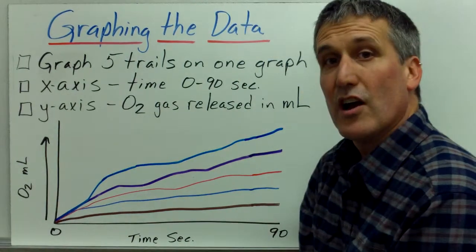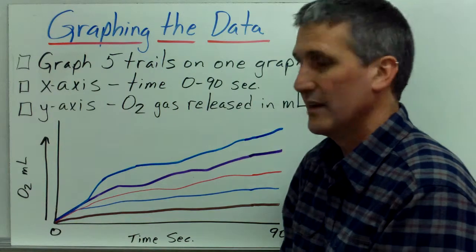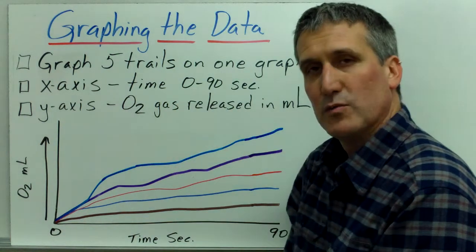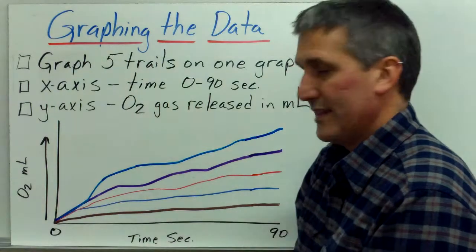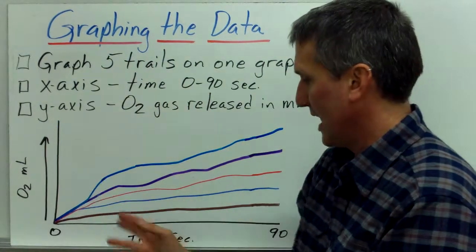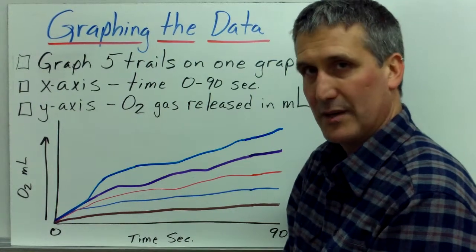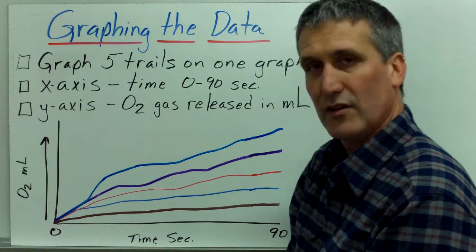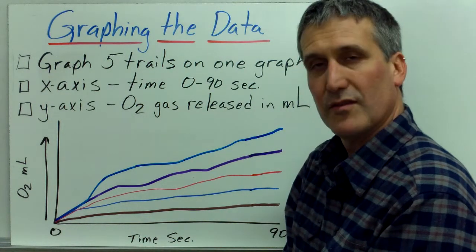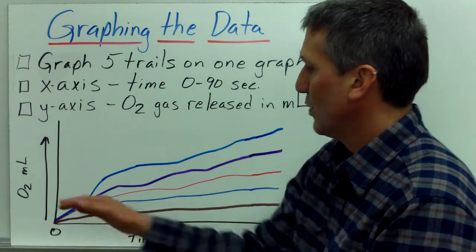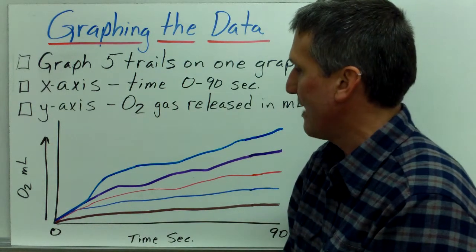Now, once we get our data, the best way to represent data is to make a visual representation of it, and the best way to do that is to make a graph. One way to display this data is to make, let's say we are talking about the enzyme concentration, and we did maybe four or five trials of different concentrations of enzymes, and we kept track of the rate of O2 being released. We can graph all five lines on one graph.